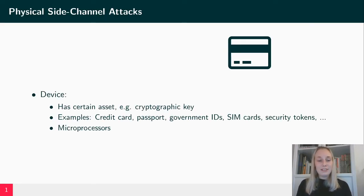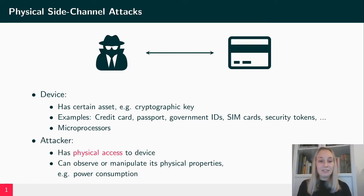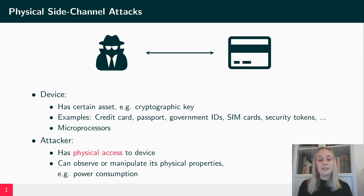In the setting of physical side-channel attacks, we have a specific device — for example a credit card, SIM card, or a government ID — and this device has a certain asset like a cryptographic key. On the other hand, we have an attacker who has physical access to this device, meaning the attacker can observe certain properties of the device, such as the power consumption of a microprocessor executing cryptographic software.